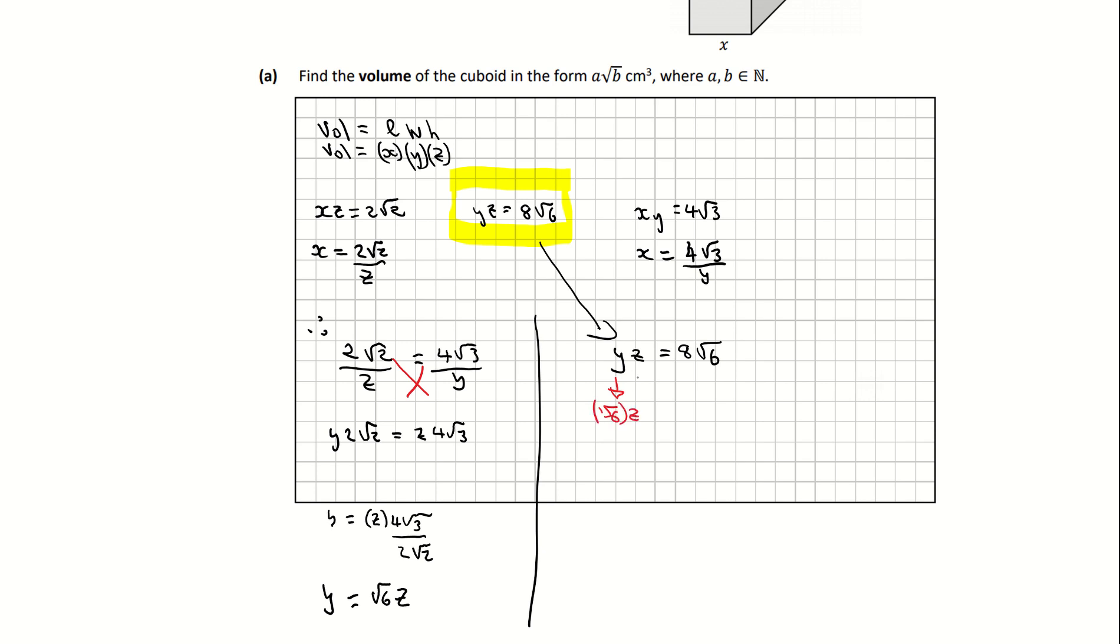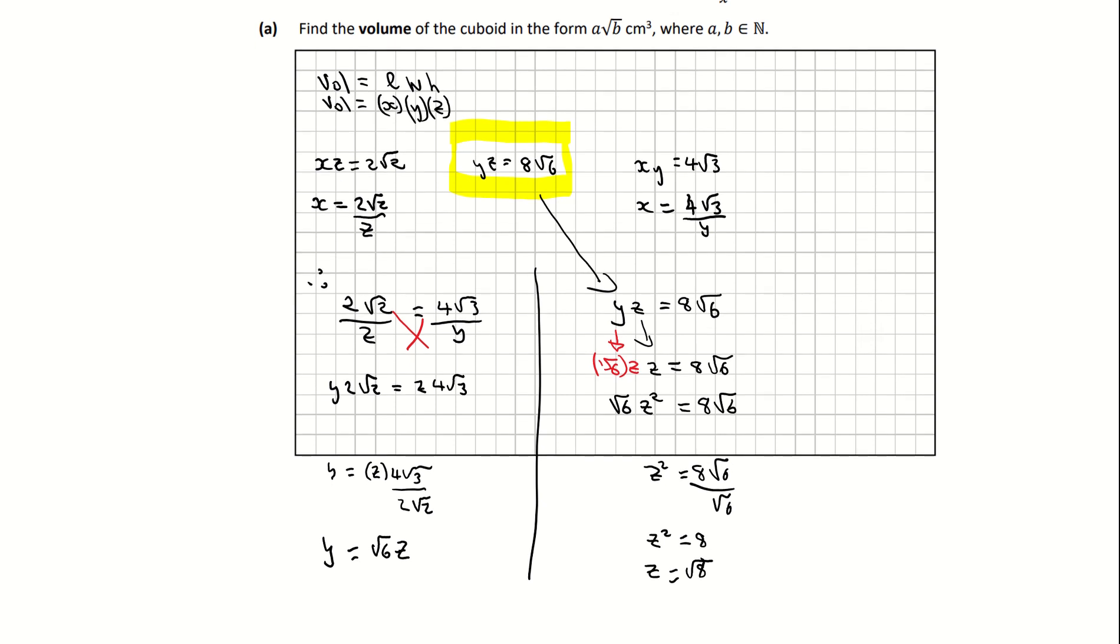And that has been multiplied by this z, and when I multiply z by z we get z squared. So that's giving me root 6 z squared equals 8 root 6. To get z squared on its own, I'm going to divide across by root 6. Root 6 divided by root 6 is just 1, so z squared equals 8. And then my final solution for z is going to be the square root of 8. So we now have the value of one of our sides.